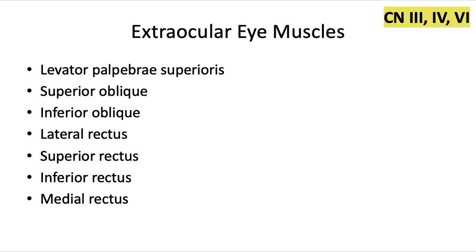We'll start with the extraocular eye muscles, and all of these are innervated by cranial nerve 3, which is the oculomotor nerve, except for two of them.